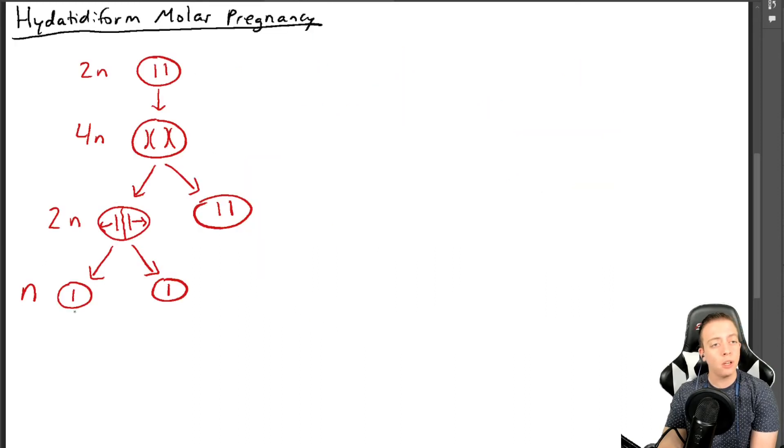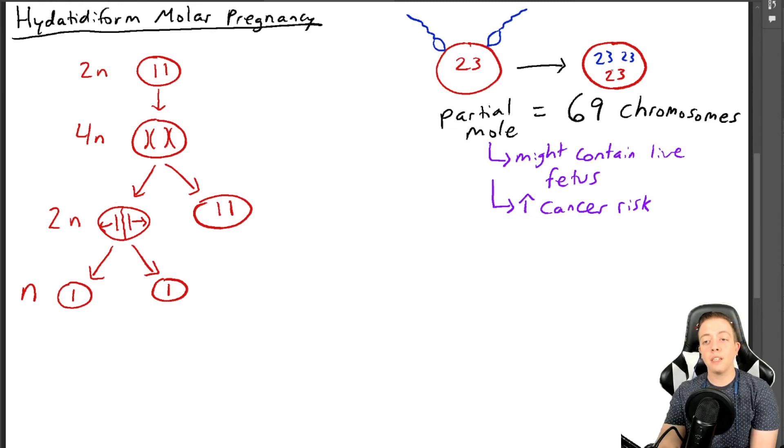So we have a typical, normal ovum, but we're going to have two sperm. So here we go. We have 23 chromosomes in the ovum, and then we have two sperm that are going to attach at the same time. They are both going to inject their nuclei. And so we get 23 from mom, and then 23 from the first sperm and 23 from the second sperm. So we have 69 chromosomes. Nice. 69 chromosomes in this zygote.